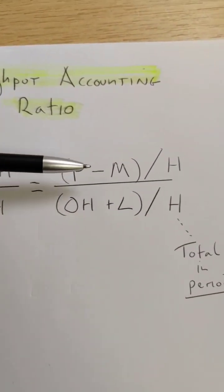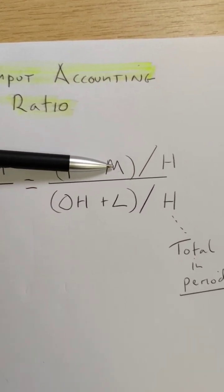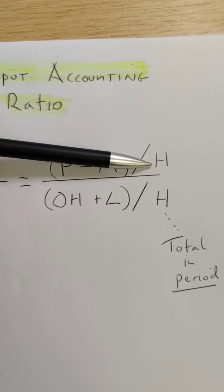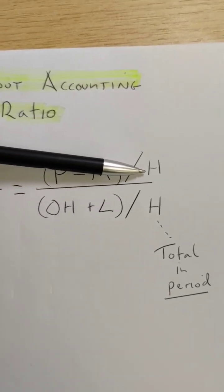Throughput contribution is price minus direct materials, so I've got to find these two variables in the question, divided by hours on the bottleneck resource.